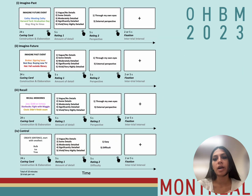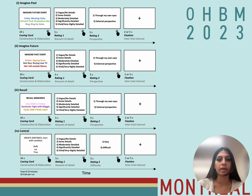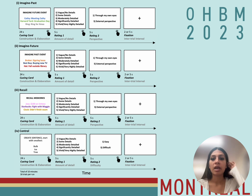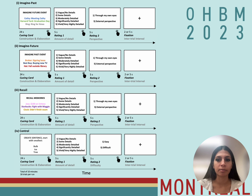Broadly, in this task participants either imagined or recalled an event, or they completed a control task. In the imagine-past and imagine-future trials, participants had to imagine specific events using details shown on the screen that could have occurred in the past or the future. In the recall condition, they remembered the corresponding memory associated with the details shown on the screen. Once participants had imagined or recalled an event, they pressed a button on the response box, marking the end of the construction phase and the beginning of the elaboration phase, in which participants were required to elaborate and expand on the event details from a field perspective.